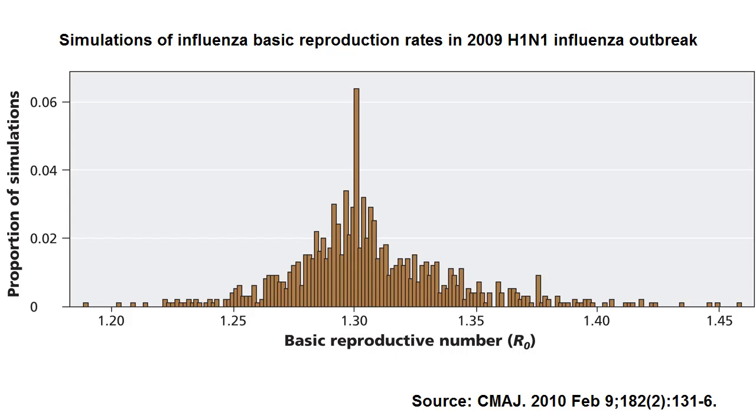so that each infected person passes the disease to slightly more than one other person, or we could say every 4 infected pass it to 5, so that over time it amplifies and grows.